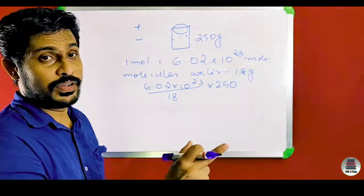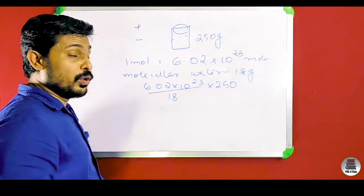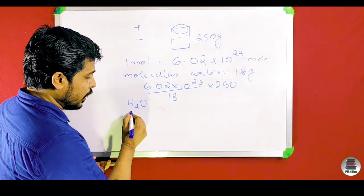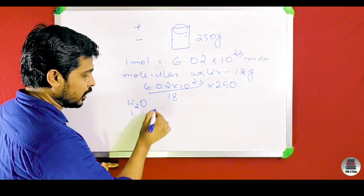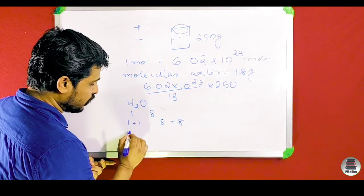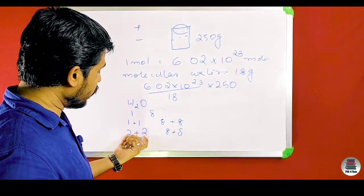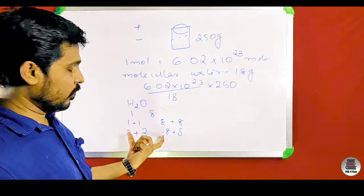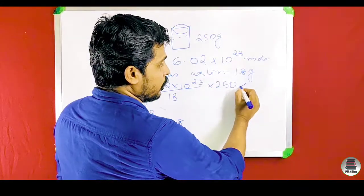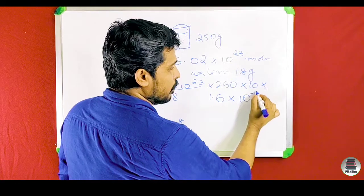One molecule of water is H₂O. Each hydrogen atom has 1 proton and 1 electron. Two hydrogen atoms give 2 protons. One oxygen has 8 protons and 8 electrons, giving a total of 10 protons per molecule. Each proton carries charge 1.6 into 10 raised to minus 19 coulombs.